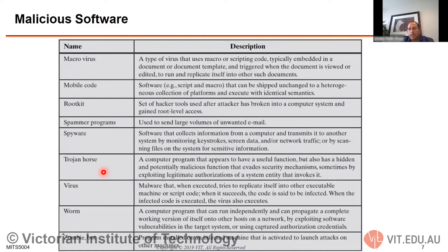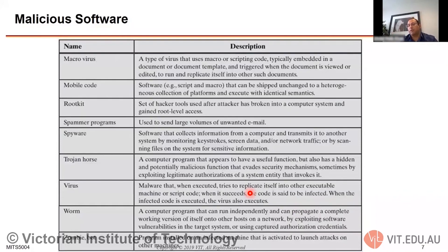A Trojan horse appears to be harmless code but widely distributes itself as part of the program while containing a computer virus. A virus is malware that tries to replicate itself across other executable machines and script codes — this is the most common type of infection. Just like a biological virus where we keep distance to avoid spreading, software viruses spread from one computer to another, one network to another.